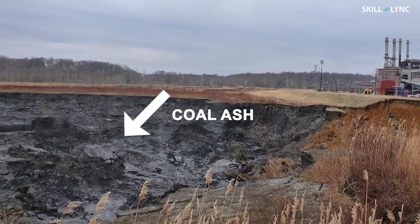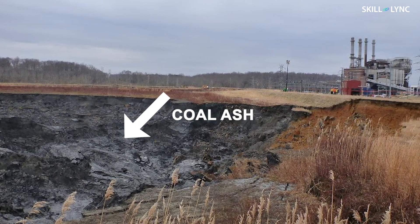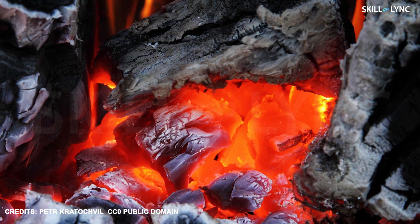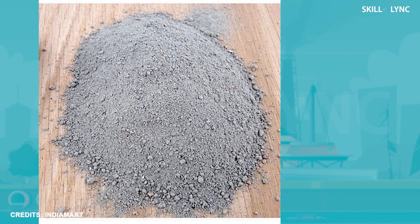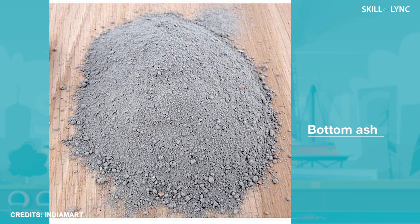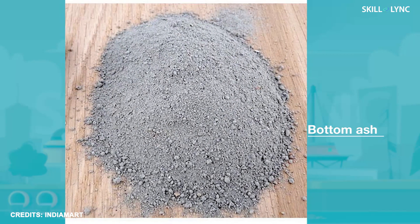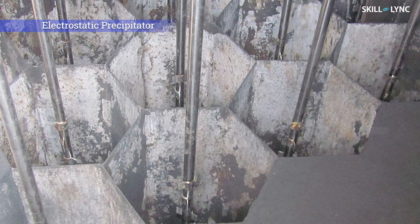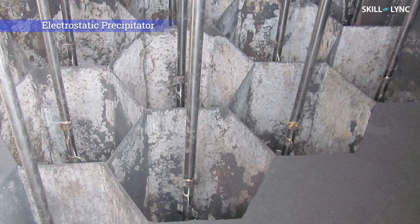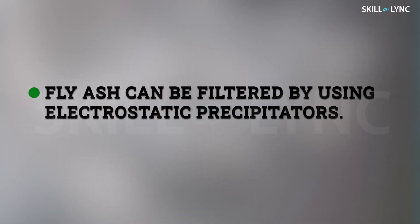Along with gaseous waste, coal power plants also produce solid waste in the form of coal ash. After the combustion of all the organic compounds in the fuel, the leftover inorganic compounds can be collected at the bottom of the combustion chamber. The ash collected from the bottom of the combustion chamber is called bottom ash, although some ash gets mixed with gases. This type of ash is called fly ash and it can be separated from the gases by filtration.